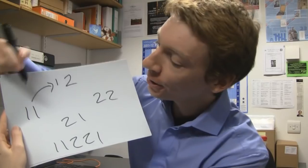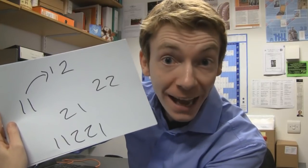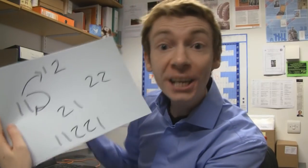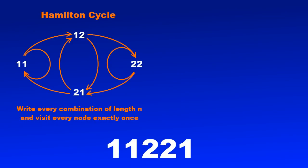On the other hand, if I started at 1-1 and added a 1 to the end, I would get 1-1-1, which actually overlaps with itself — it loops back to 1-1. Continuing in this way, you get a diagram called a graph. Now all you have to do is find a path that visits every node of the graph exactly once. Starting at 1-1, you get 1-1, 1-2, 2-2, and 2-1. Visiting every node exactly once is called a Hamilton path.